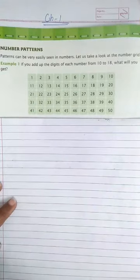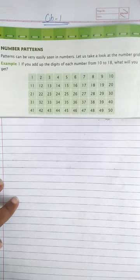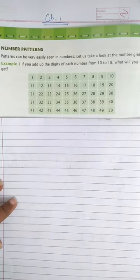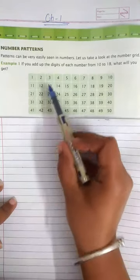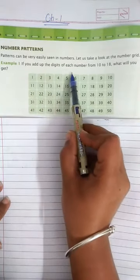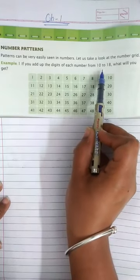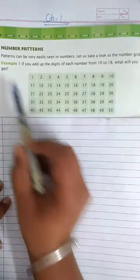Next is number patterns. Patterns can be very easily seen in numbers. Let us take an example. If you add the digits of each number from 10 to 18, what will you get?